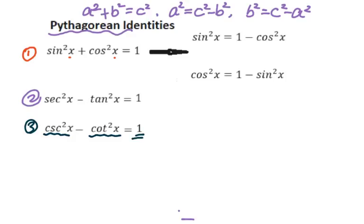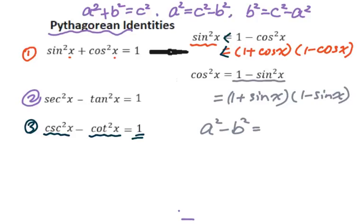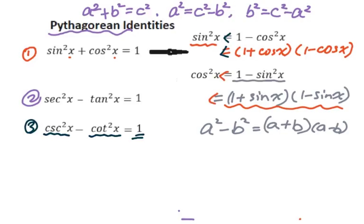The twisted Pythagorean identities: sin squared x equals 1 minus cos squared x, which factors as (1 + cos x)(1 − cos x). Working backwards, (1 + cos x)(1 − cos x) gives sin squared x. For cos squared x, you get 1 minus sin squared x, which factors as (1 + sin x)(1 − sin x). Working backwards, that gives cos squared x. Remember: a squared minus b squared equals (a + b)(a − b) — this is the conjugate multiply.